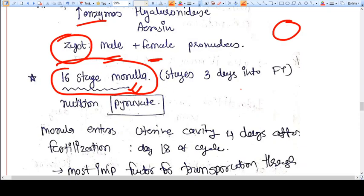Three to four days—until then, the zygote is in the fallopian tube. So from the fallopian tube, the zygote enters into the uterine cavity after three days.